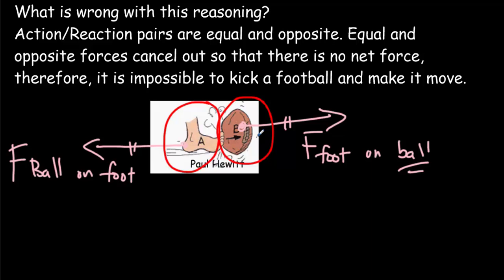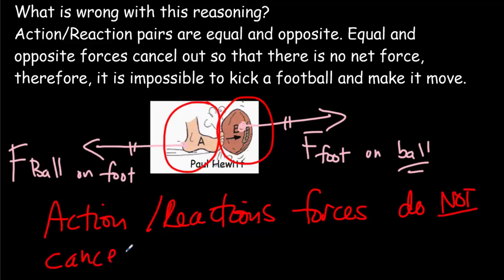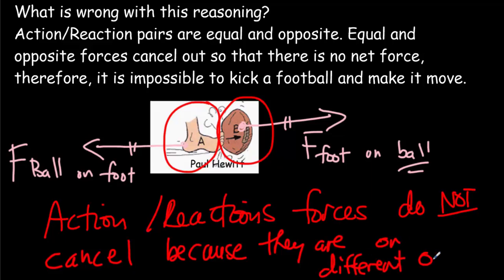The foot, it really doesn't care that there's forces on the football. It just knows that there's a backwards force on it. And, that's going to slow down the foot's motion. So, the critical idea here is that the action-reaction forces do not cancel because they are on different objects. Key phrase there, different objects.